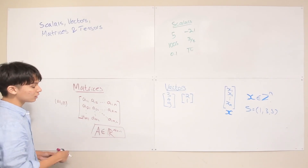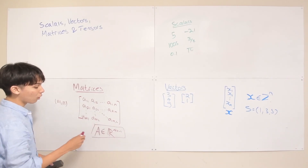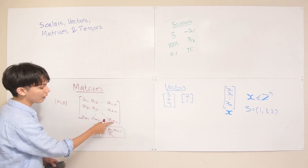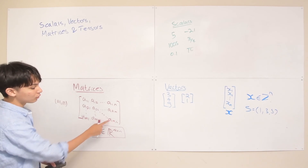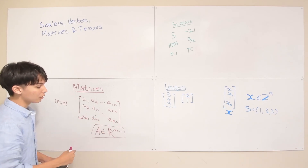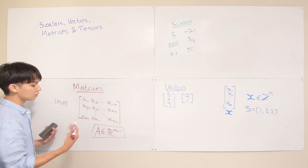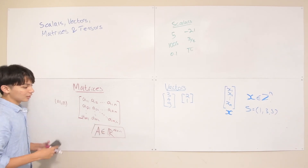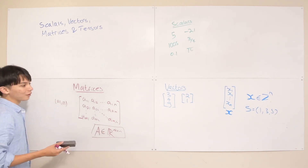Of course, the bottom-right element is Aₘₙ, where m is the number of rows and n is the number of columns. That's how it works.